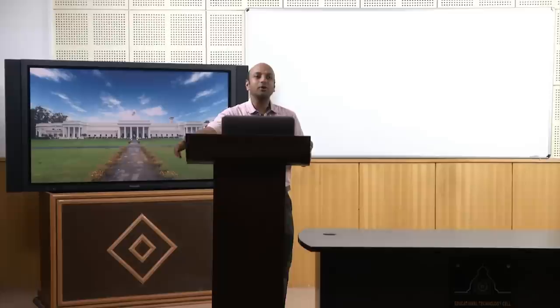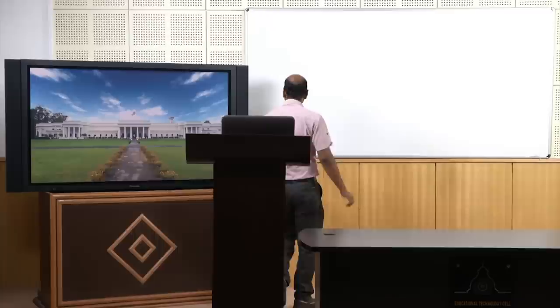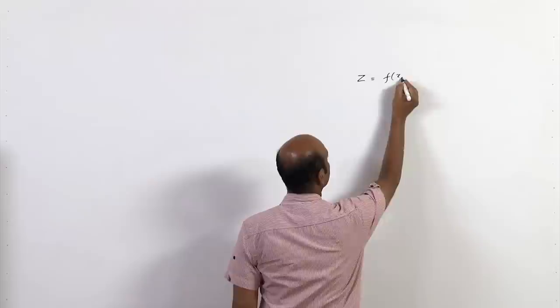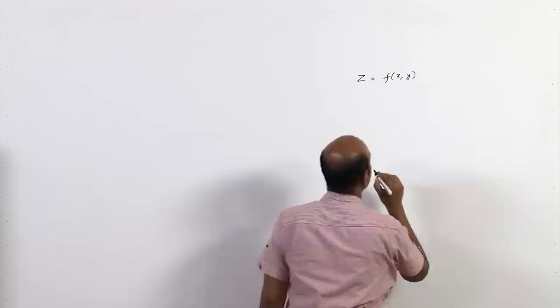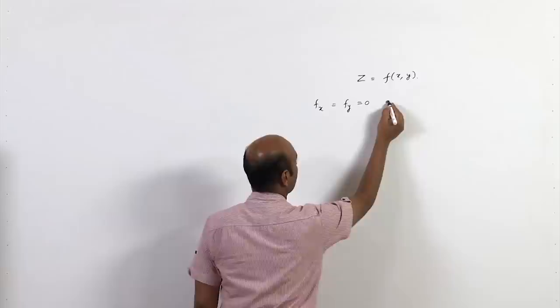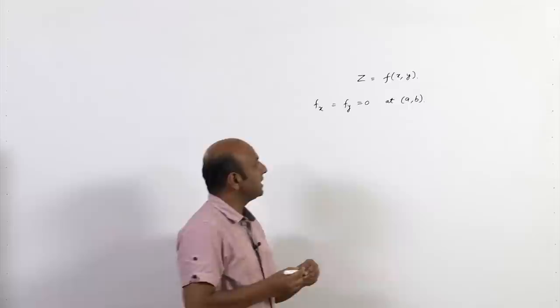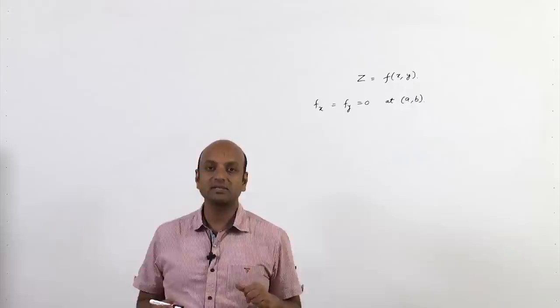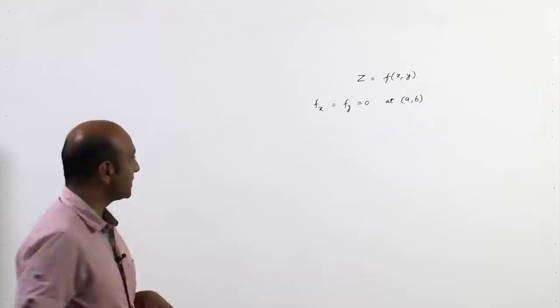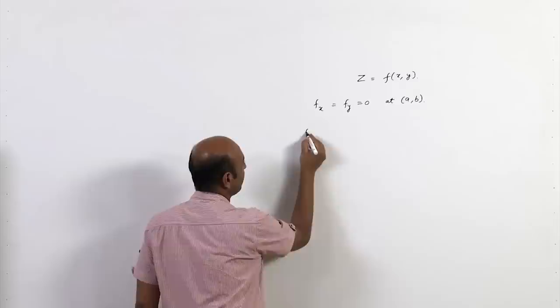Hello friends. Welcome to the lecture series on multivariable calculus. In the last lecture we saw how to find maxima and minima for two-variable functions. If we have a function z = f(x,y), then suppose f_x = f_y = 0 at (a,b). To check whether this point (a,b) is a point of local maxima, local minima, or a saddle point, we use the second-order partial derivative test.